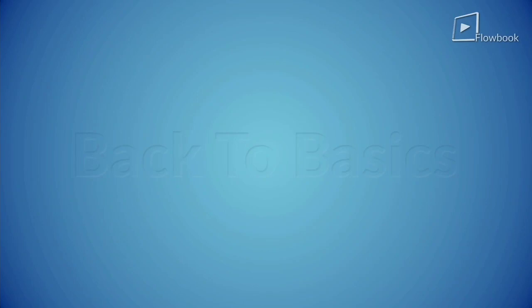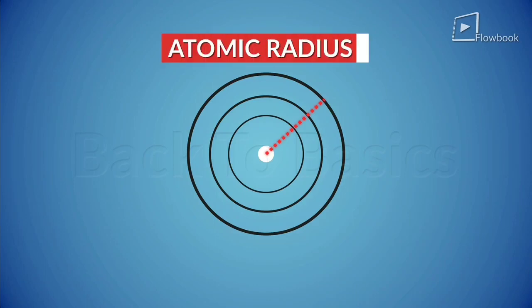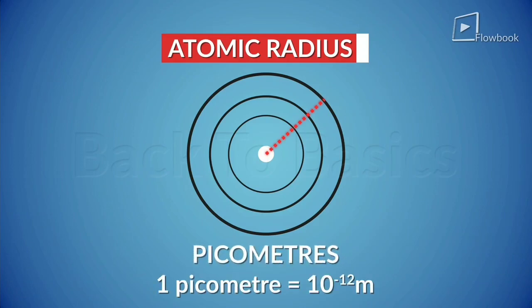Another interesting behavior exists in the atomic size. The atomic size is basically the distance from the nucleus to the outermost shell and that's why it's also called the atomic radius. This atomic radius is measured in picometers. One picometer is equal to 10 to the power minus 12 meters.